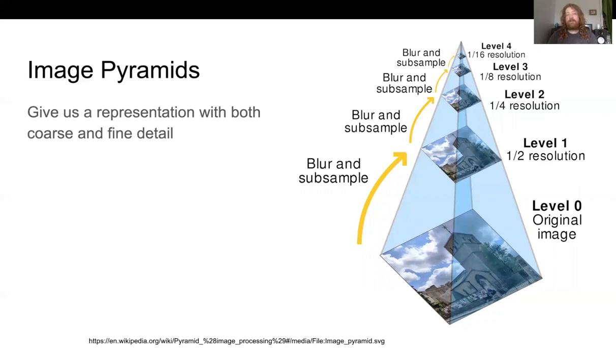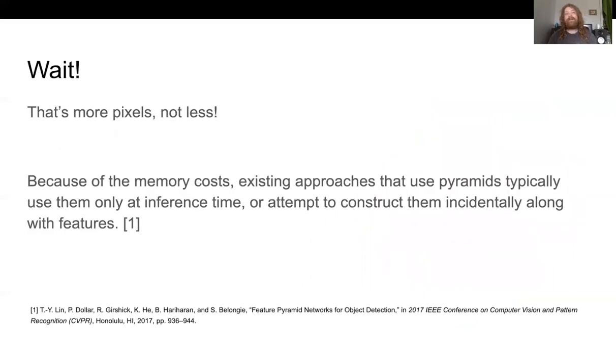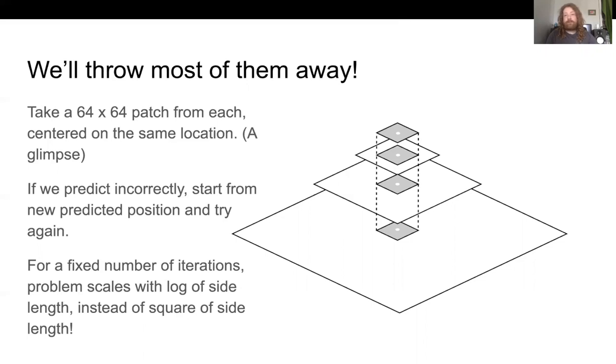Image pyramids give us both things at once - really high density sampling of the original image and lower sampling levels as you go higher up into the pyramid. But wait, you say, that's more pixels, not less. Yeah. So what we're actually going to do is throw most of those pixels away. We'll take a 64 by 64 patch from each level of the pyramid centered on wherever we're currently focused. The notable thing is if we use a fixed number of iterations, the problem scales with the log of the side length rather than the square of the side length, which makes much larger images possible.